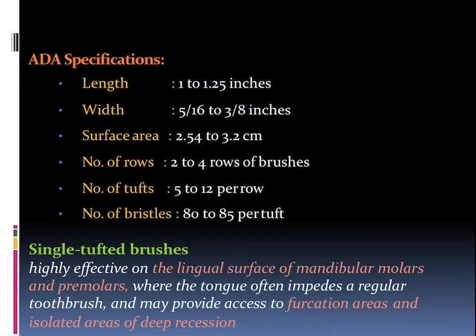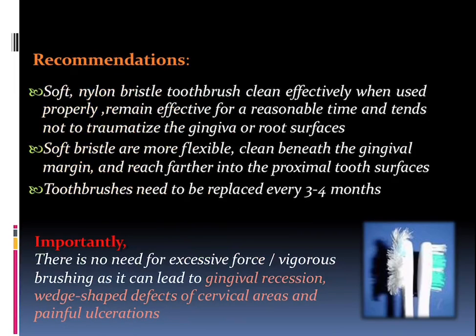Single-tufted brushes are highly effective on the lingual surface of mandibular molars and premolars, but the tongue often impedes a regular toothbrush. They may provide access to furcation areas and in isolated areas of deep recession in the posterior teeth. These are recommended using soft nylon bristle brushes, which can be used effectively when properly applied, remain effective for a reasonable time, and tend not to traumatize the gingiva or the root surface. Soft bristles are more flexible, clean beneath the gingival margin, and reach further into proximal surfaces.